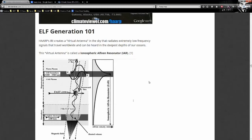What they're doing is creating a virtual antenna in the sky that radiates extremely low frequency signals that travel worldwide and can be heard in the deepest depths of our oceans. This virtual antenna is called an ionospheric Alfven resonator, IAR.